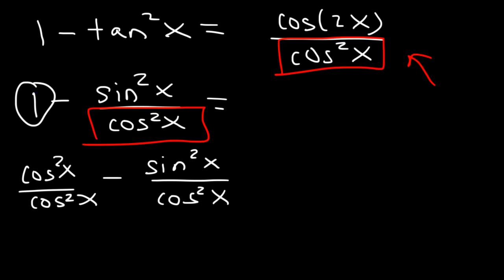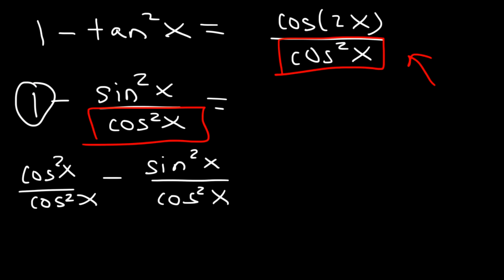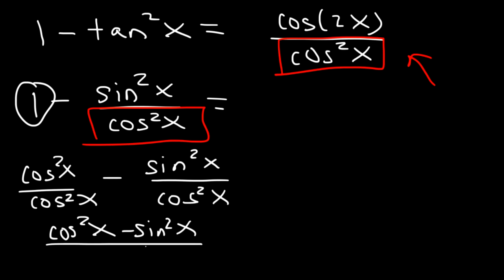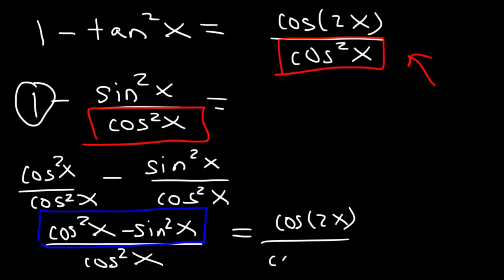We have two terms on the left and only one on the right, so we need to combine them into a single fraction. That gives us (cos²x - sin²x) all divided by cos²x. Do you recognize this? Cos²x - sin²x is the double angle formula for cosine — it's cos2x. So the left side matches the right side and we've verified the identity.